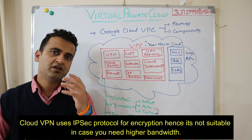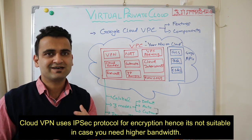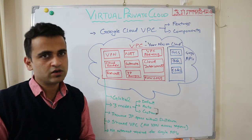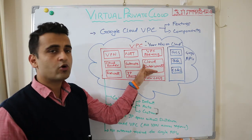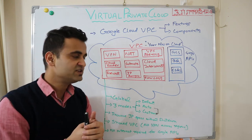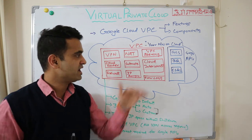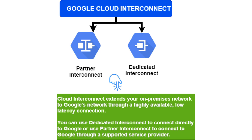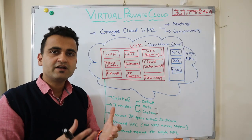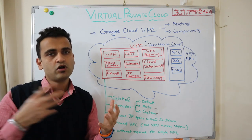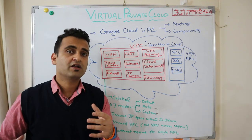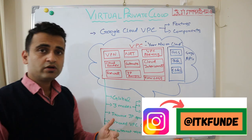If you need higher bandwidth or higher throughput, VPN might not be a better option because VPN uses the IPSec protocol, which is a bit heavy in nature — it has additional encryption headers which slow down the data transfer rate. So if you have needs of more than 10 Gbps throughput, instead of using Cloud VPN to connect from your on-prem to your Google Cloud network, you should use Cloud Interconnect, which is a direct virtual LAN established between your data center and Google Cloud.